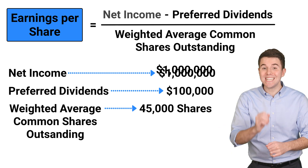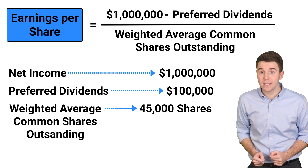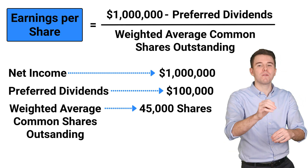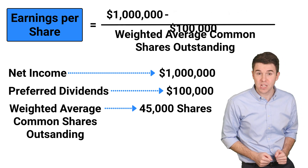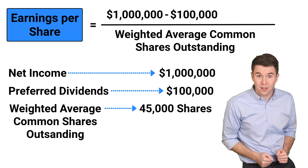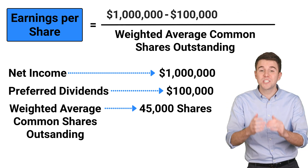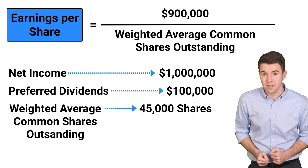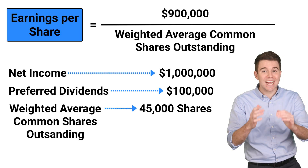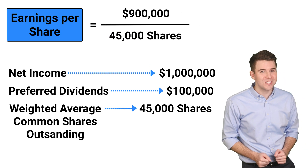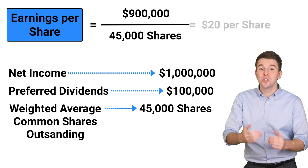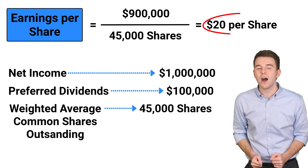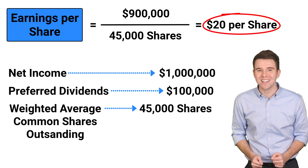Now to determine basic earnings per share, we take net income of $1 million and subtract the preferred dividends of $100,000, which gives us $900,000. Next, we divide that by 45,000 shares to get earnings per share of $20.